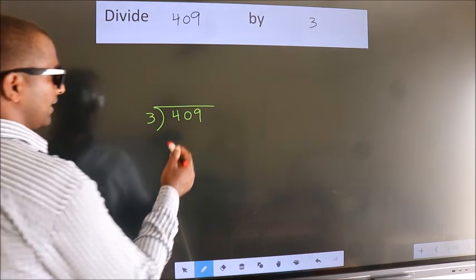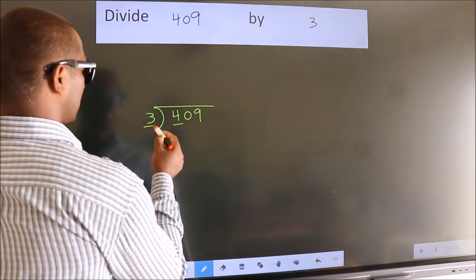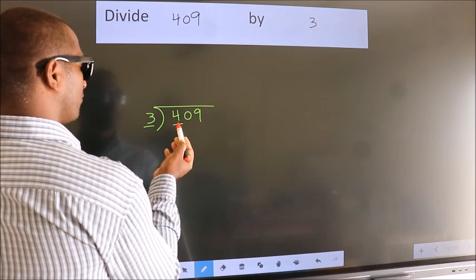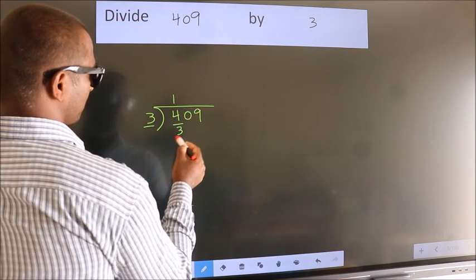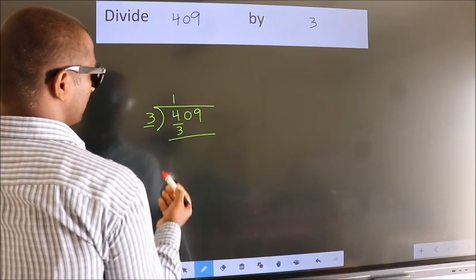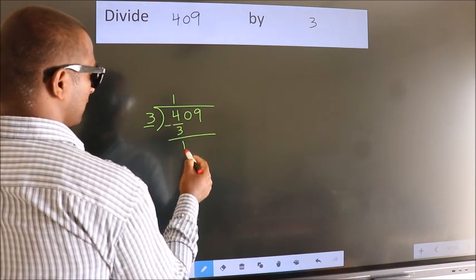Next. Here we have 4. Here 3. A number close to 4 in 3 table is 3 1s 3. Now we should subtract. We get 1.